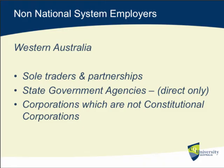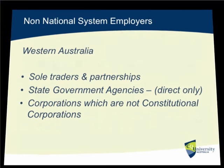The contrast is with Western Australia, which simply refused to cooperate. In Western Australia you still have the situation where sole traders, partnerships, and mums-and-dads operations are covered by the Western Australian system. State government agencies — but only so far as they are directly controlled by the government — are still in the Western Australian system. I make that reservation because if an agency sets up another agency as a company, they may very well be drawn into the national system, as they're now a corporation. And finally, corporations which are not constitutional corporations — that is, not trading or financial — would include those not-for-profits that were a little difficult to decide.